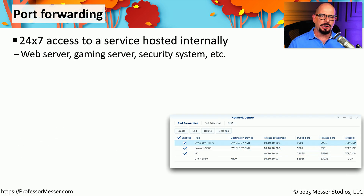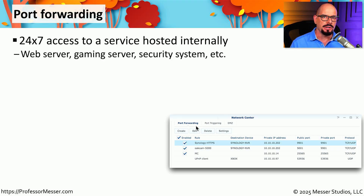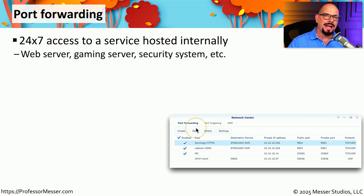In the network configuration of your SOHO router, you might see an option for port forwarding. This is a way to allow devices on the internet to gain access to services on the inside of your network. For example, you could turn on a web server on the inside of your network, create a port forwarding rule, and now anyone on the internet would be able to traverse your firewall to gain access to that web server.